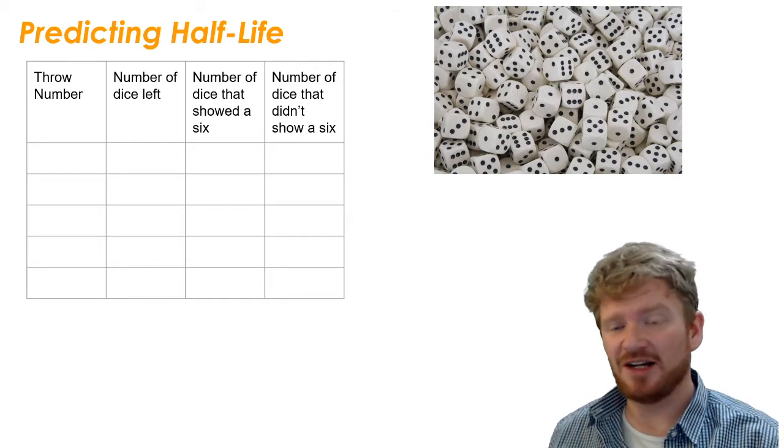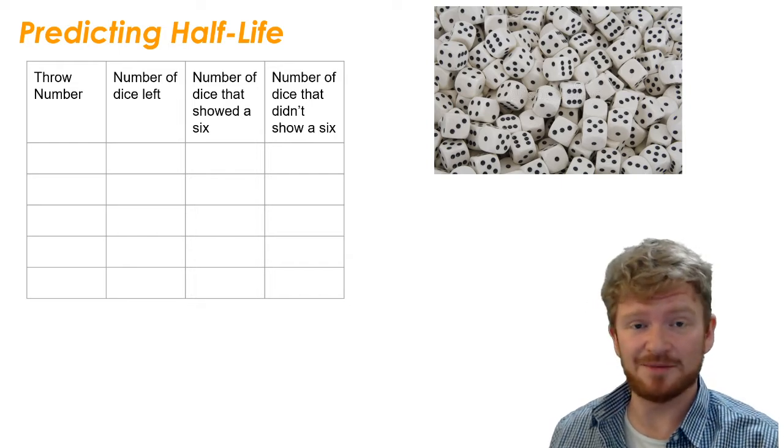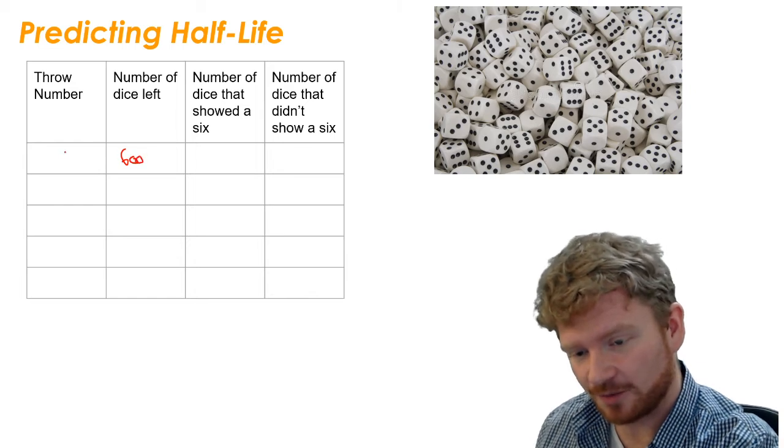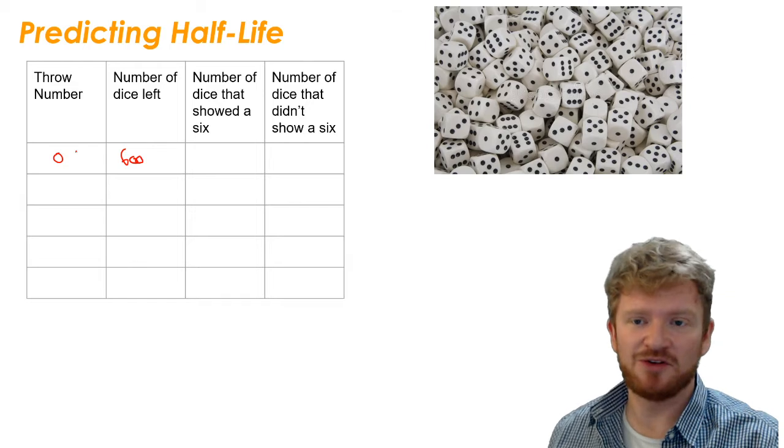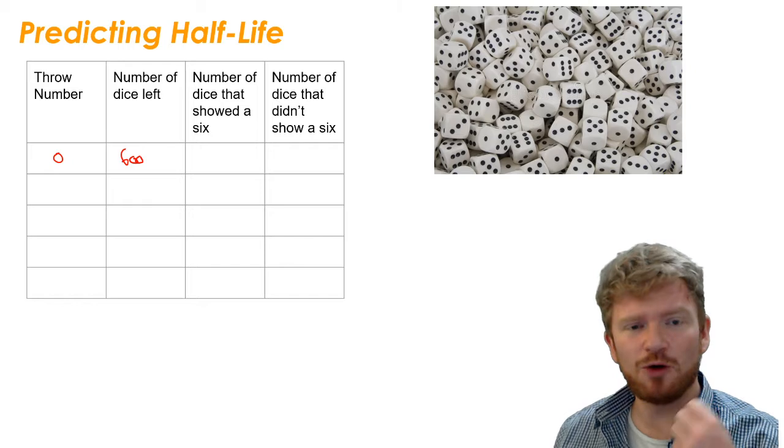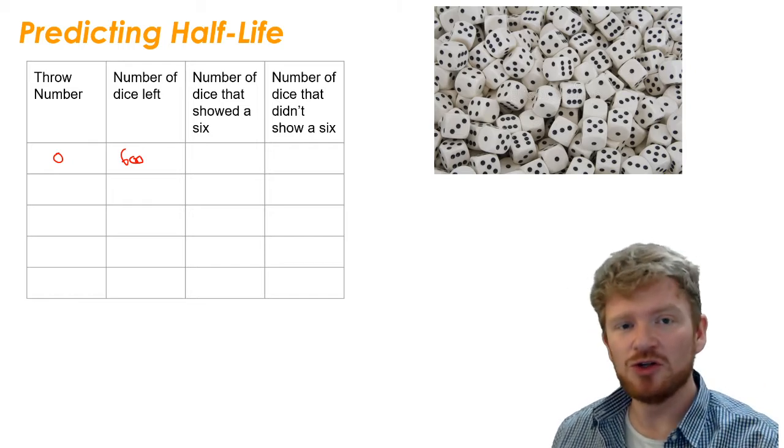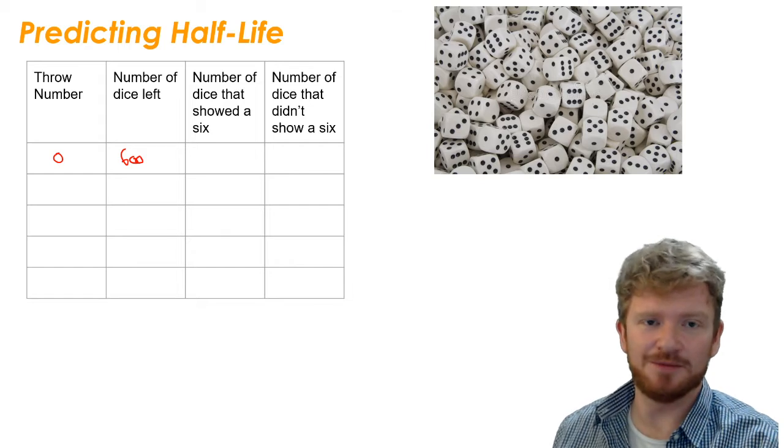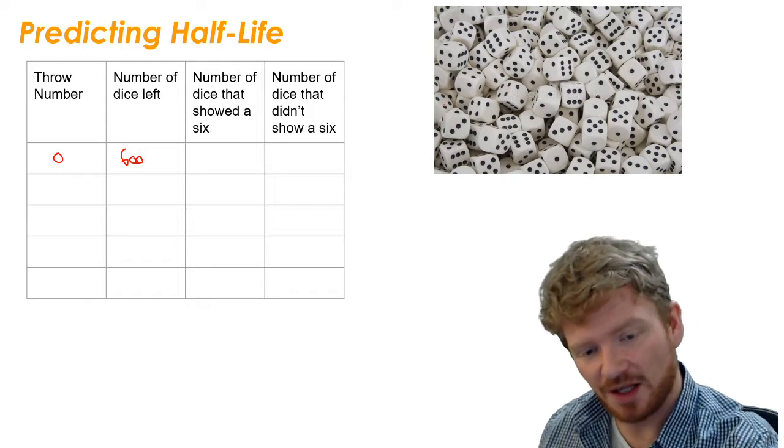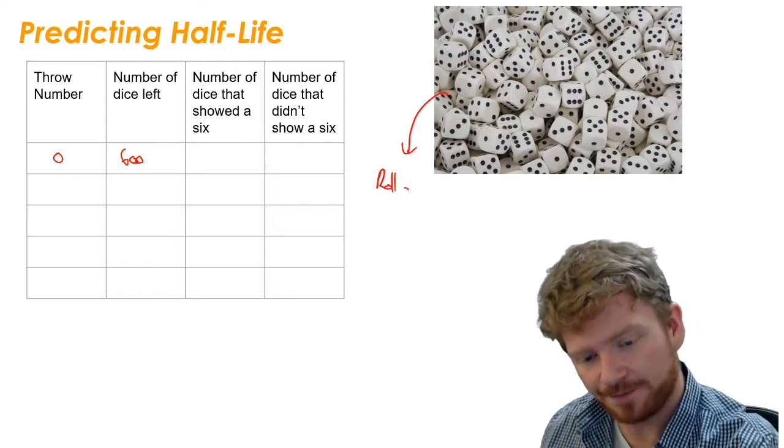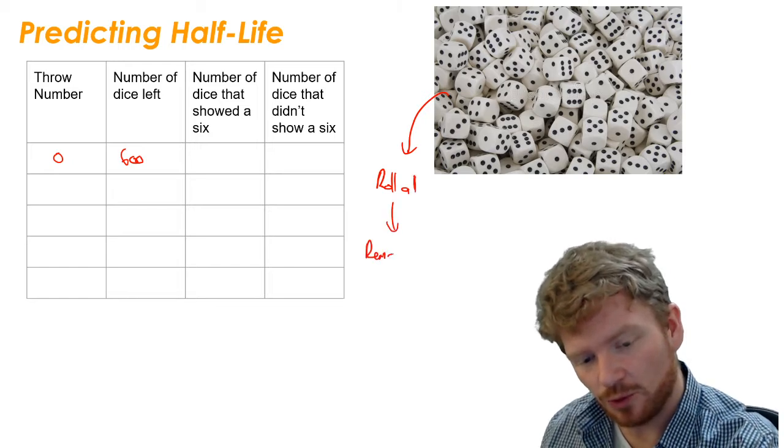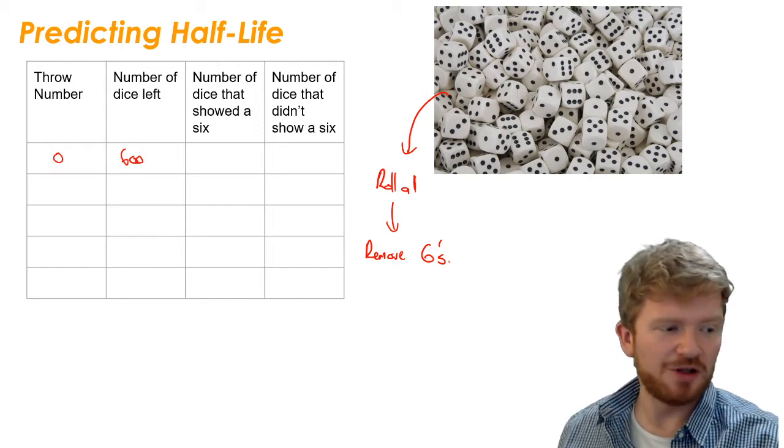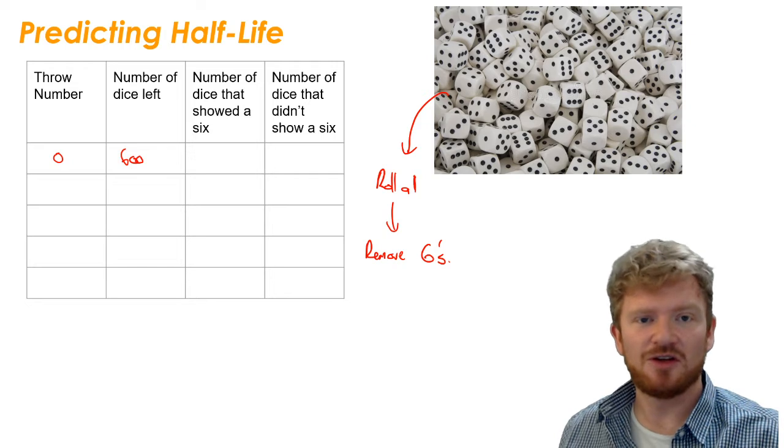So I want you to imagine that I give you a big bag of dice. I'm going to start off with 600 dice. As hopefully you know from maths, if you roll a single dice, you have absolutely no way of knowing what number will come up. But you do know how likely you are to get a number. What I want you to imagine is we're going to start with our 600 dice, and after we've rolled them all, we're going to remove any dice that came up with a six. Is it possible to work out what will happen during this experiment? Well, actually it is.